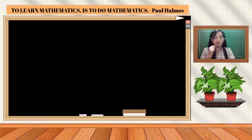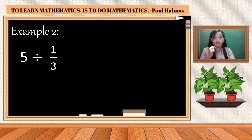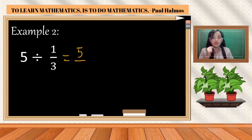It is up to you if you want to use the long method or the short method. Example number two: five divided by one-third. Our dividend is a whole number, so we convert it into a fraction — the denominator of a whole number is always one, giving us five over one.